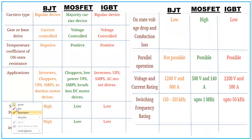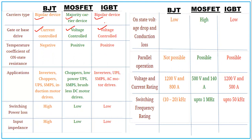BJT is a bipolar device, MOSFET is a majority carrier device, and IGBT is also a bipolar device. Importantly, BJT is current-controlled, MOSFET is voltage-controlled, and IGBT is also voltage-controlled. The temperature coefficient of on-state resistance is negative for BJT and positive for MOSFET and IGBT. Applications include inverters, choppers, UPS, and DC motor drives. Specific ratings: BJT 1200 V / 800 A, MOSFET 500 V / 140 A, IGBT 1200 V / 500 A. Switching losses are high for BJT, low for MOSFET, and very low for IGBT.